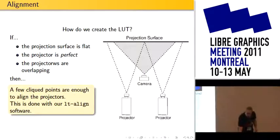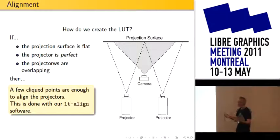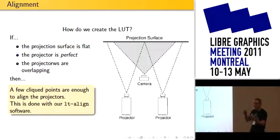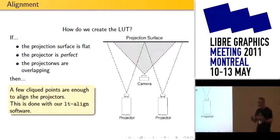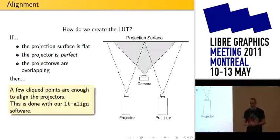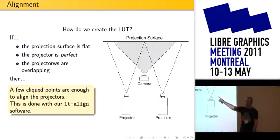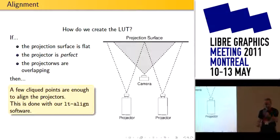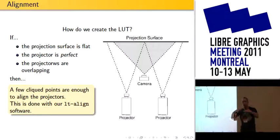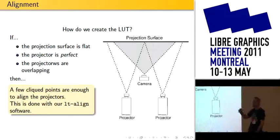How do you create the lookup table? You could go to Krita and draw one, but it's not going to work really well — you need to align. There are two ways: you can align by hand or using a camera automatically. For a few projectors, you can try alignment by hand, but you need a flat surface, projectors with no radial distortion, and the projectors must be overlapping. If there's no overlap, it's very hard to align by clicking on points. You click on a few points, and then the projectors will be aligned.